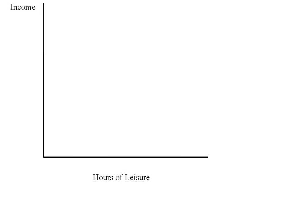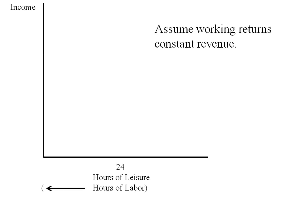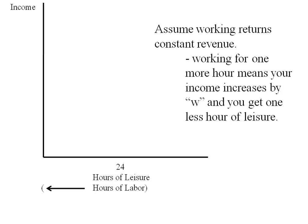So typically when we graph the labor-leisure trade-off, we'll put hours of leisure on the horizontal axis and the income you could be earning on the vertical axis. You could also look at the horizontal axis as hours of labor, because leisure and labor have a trade-off here. We could do the daily amount, which would be 24 hours. We're going to assume working returns a constant revenue, so if you work another hour, you get W more in income — your wage — and one less hour of leisure. So the maximum income you could earn would be 24 times W dollars. We'll connect these dots and call that our budget line one, also known as the leisure-income line.